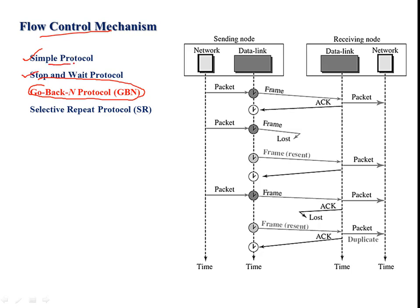In the simple protocol, it tells how the packet is actually transmitted from the sender to the receiver, but it doesn't worry about the flow or how well the receiver is receiving all the packets effectively. Stop-and-wait protocol controls the first mechanism of flow control, because if the receiver capacity is less than the sender capacity, it cannot accept all the packets transmitted from the sender.